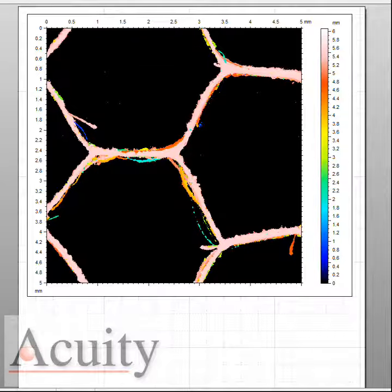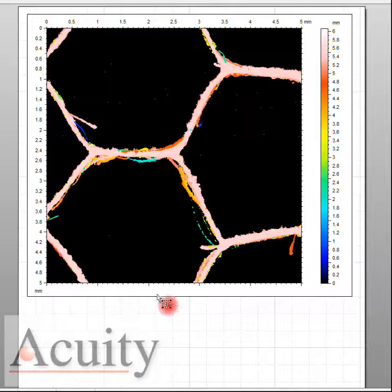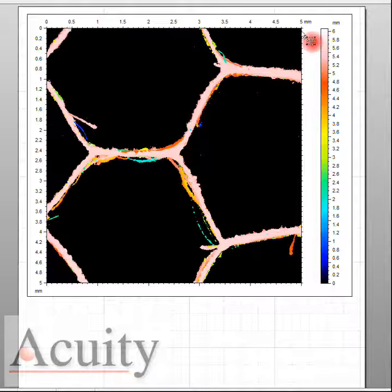In this application we're using the Acuity CL5 white light confocal probe to make a topography measurement of a very difficult thinned wall honeycomb type structure. Here you can see we've gone five millimeters by five millimeters, and every four microns on the X dimension we've taken a sample, and we'd move it down four microns and go back across and take it.